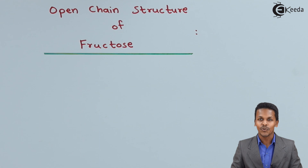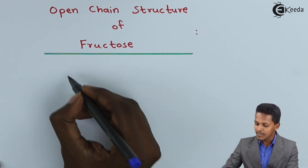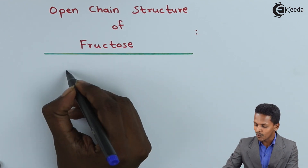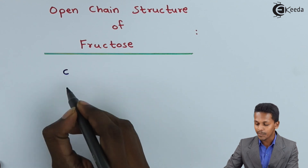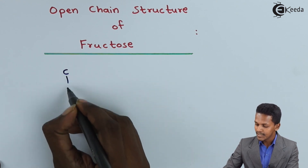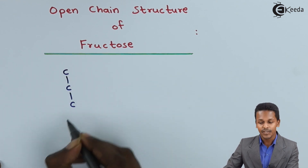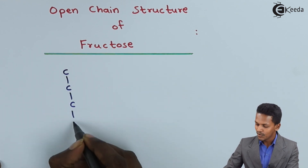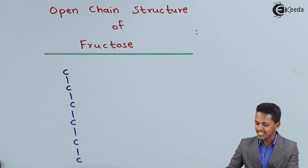Let us draw the structure of fructose, which consists of 6 carbon atoms. So I am drawing the structure in this way — this is the first carbon atom, the second, the third, fourth, fifth, and this is the sixth one.